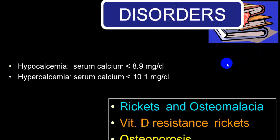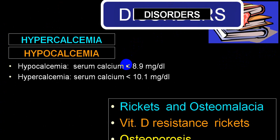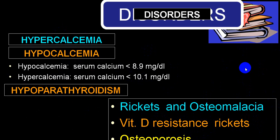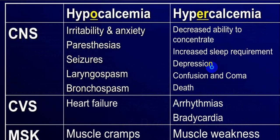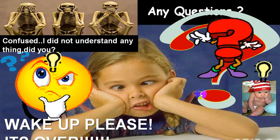The two main disorders are hypocalcemia — serum calcium less than 8.9 — and hypercalcemia — more than 10 mg/dL. Other associated disorders include rickets, osteomalacia, vitamin D-resistant rickets, and osteoporosis, to be discussed separately. Hyperparathyroidism and vitamin D disorders can also cause abnormal calcium levels. Calcium imbalance can affect the brain, cardiovascular system, and skeletal muscles, to be discussed in detail in further chapters.